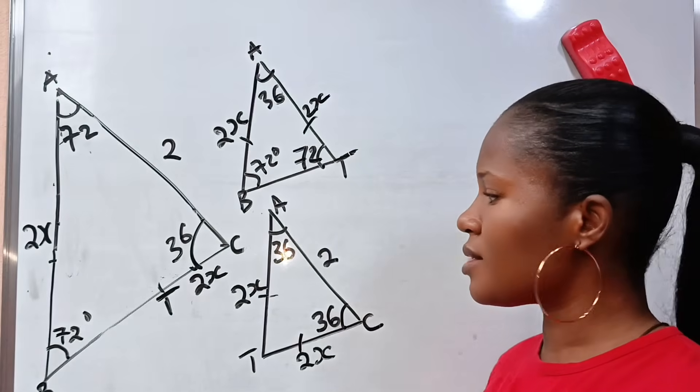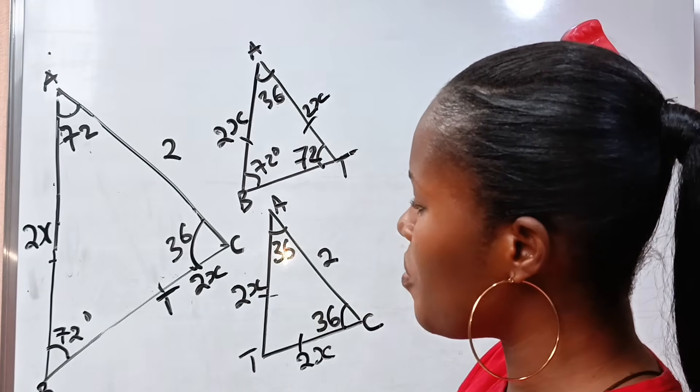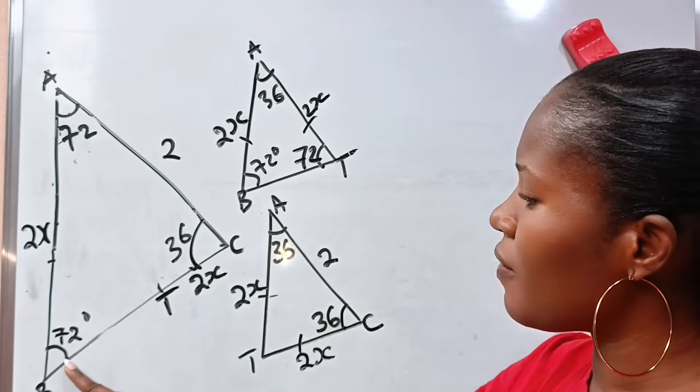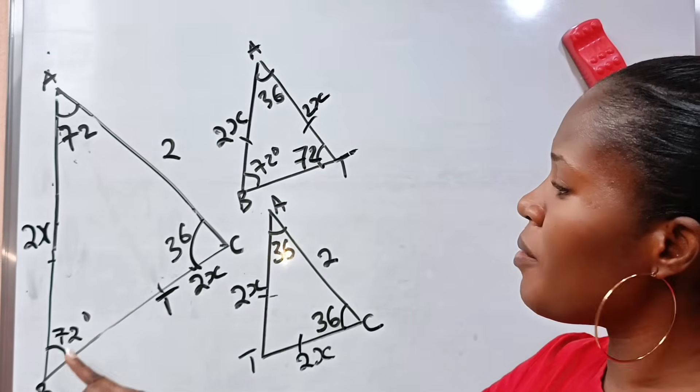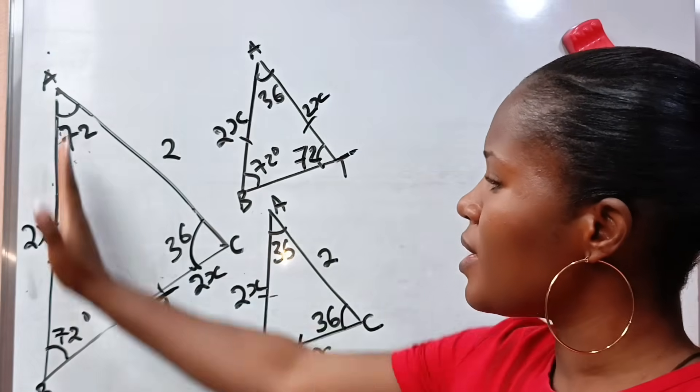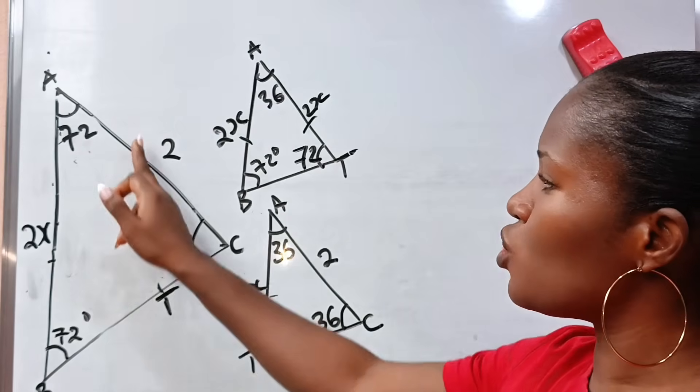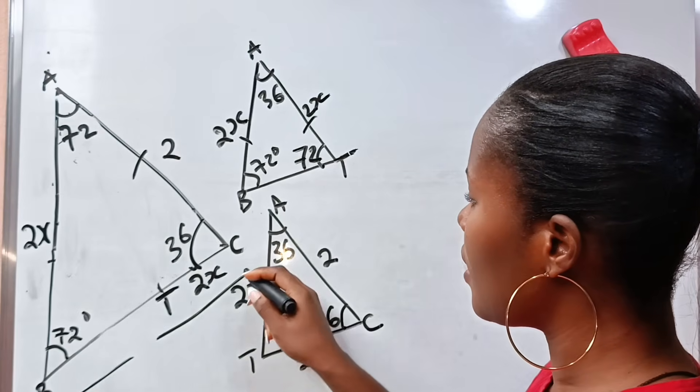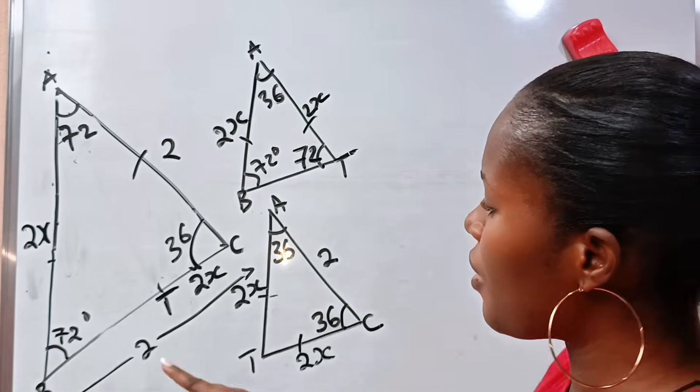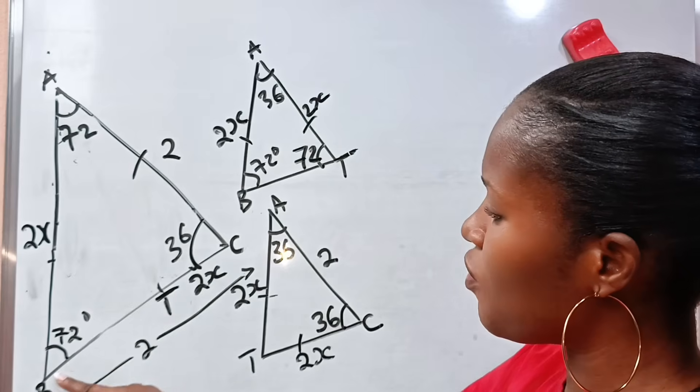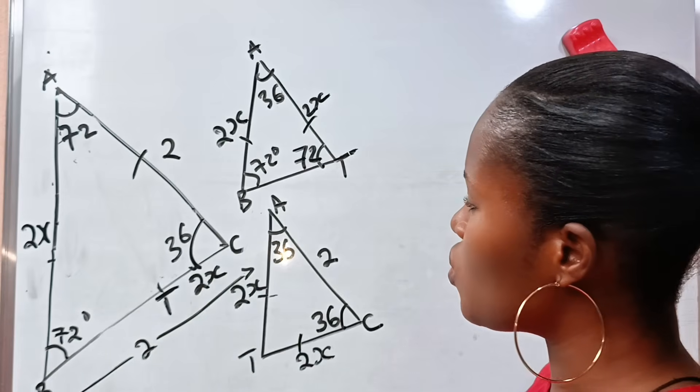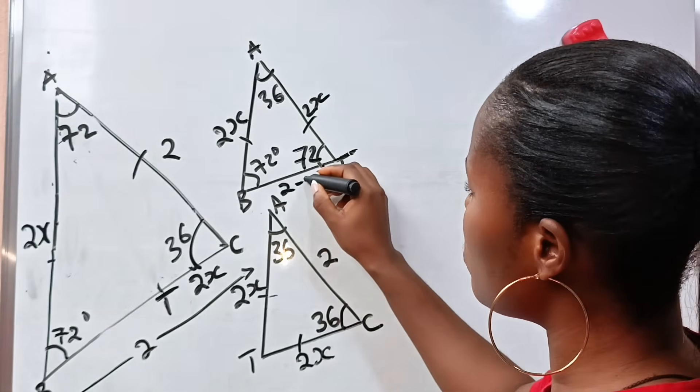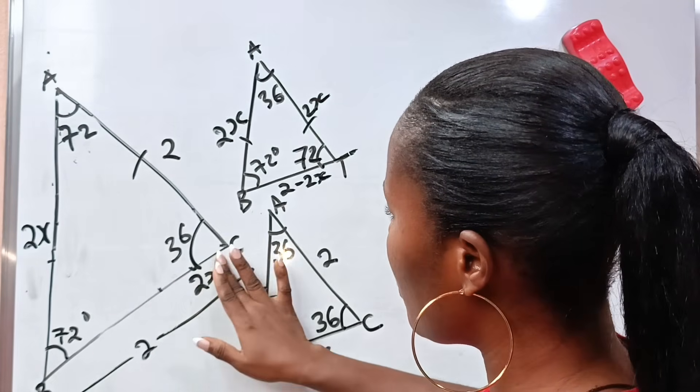Now if you look at this, if this place is 2X, it means that this remaining part of this triangle, BT, is what? Look at this triangle. We have 72 here and we have 72 here. Now that means that this triangle is also an isosceles triangle of base 72 and 72. So these two sides should be equal. So it means that if AC is equal to 2, then BC is also equal to 2. Now if BC is equal to 2, remember that we have BT here. From here to here is BT. So BT should be 2 minus 2X. And this is our BT. BT is 2 minus 2X. So that is all I need from here. So this place is 2. I hope I didn't confuse you.